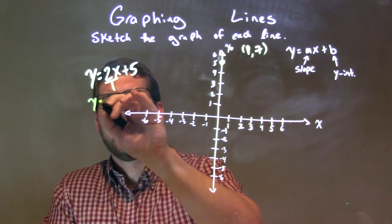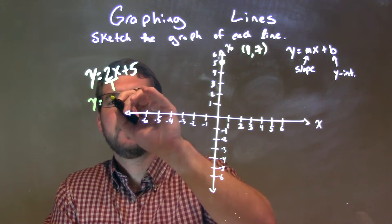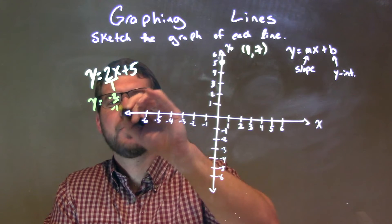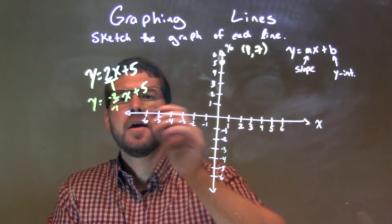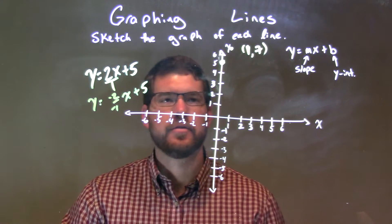But that line, y equals 2x plus 5 is the same thing as y equals negative 2 over negative 1x plus 5, right? Because negative 2 divided by negative 1 is a positive 2, right?